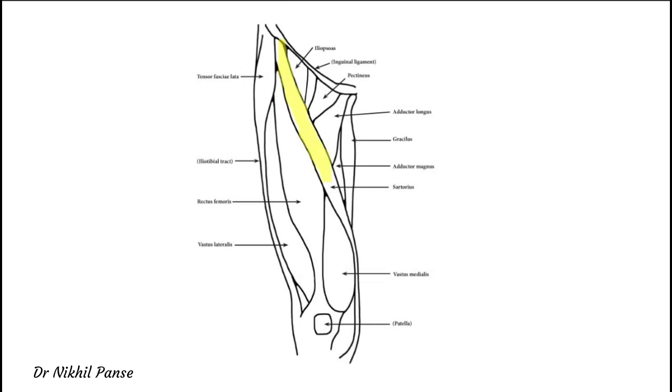Let us see the important anatomical structures. This is the sartorius which is marked. These are the important muscles in relation to the vascular basis. We would not be discussing other muscles.